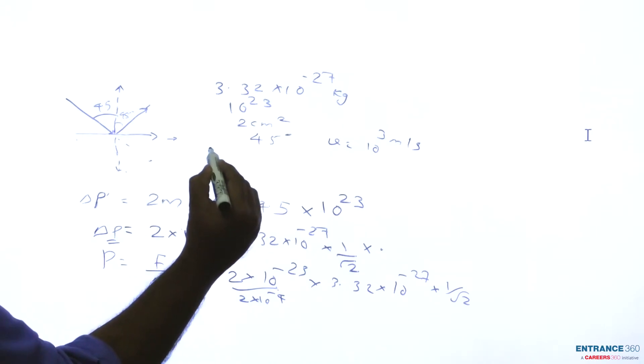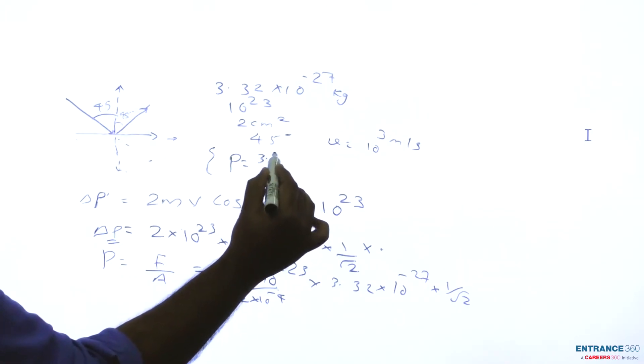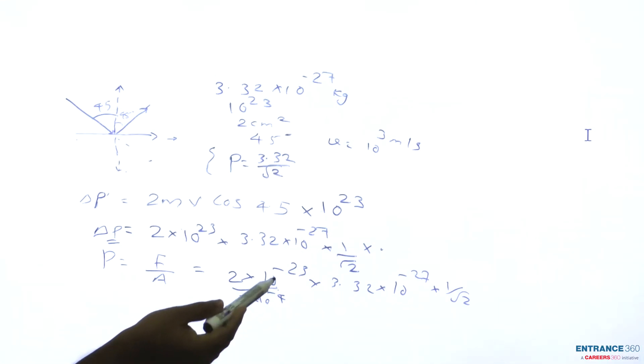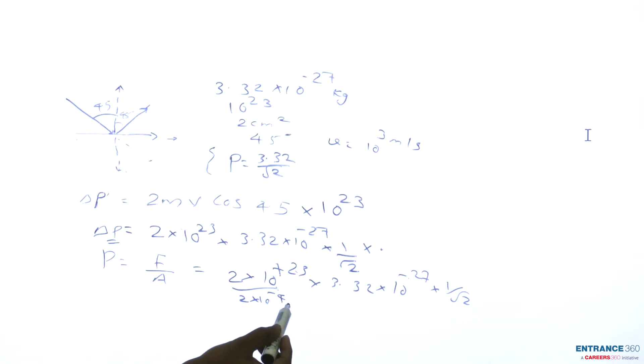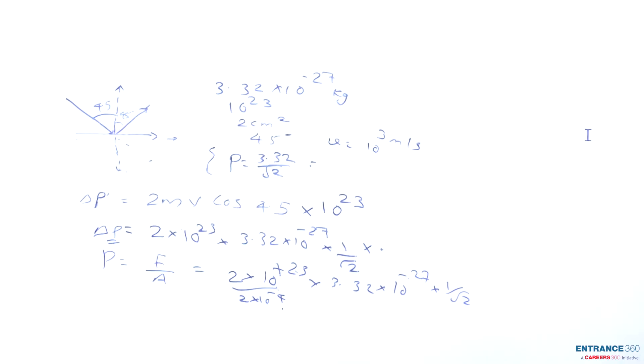Remaining term will be 3.32/√2. For powers of 10: 10^23 × 10^-27 gives 10^-4. These cancel with the 10^-4 in the denominator, and you get approximately 2.35.